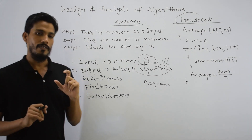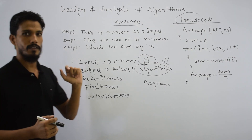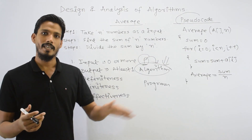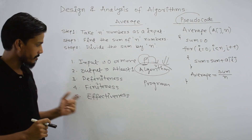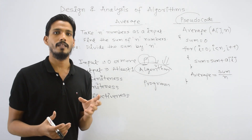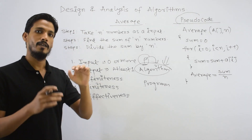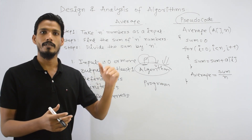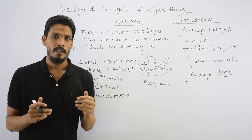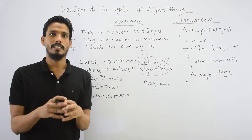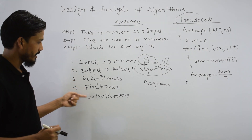Finiteness means the number of steps in your algorithm must be finite. This algorithm is completed in 3 steps — it could be 10, 100, or 1,000 steps, but you cannot keep going forever. The number of steps must be finite. Next is effectiveness. Effectiveness means the algorithm should use only the steps required. If we find a solution in 3 steps, we don't need to write 4, 5, or 6 extra lines. For instance, making a recipe — use only the ingredients needed. These are the 5 properties: input, output, definiteness, finiteness, and effectiveness.